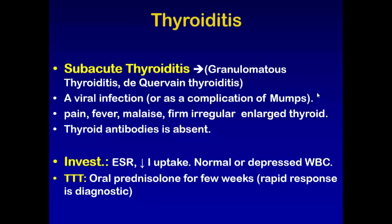The clinical presentation includes pain in the neck, fever, malaise, and firm irregular enlargement of the thyroid. There is a large, red, hot, tender thyroid gland. Thyroid antibodies are absent. Investigations: ESR will be elevated, iodine uptake decreased, and white blood cell count normal or depressed. Treatment is with oral prednisolone for a few days. A rapid response to treatment is diagnostic for De Quervain's thyroiditis.